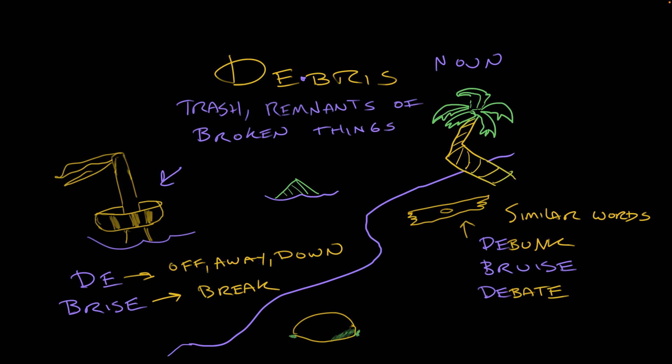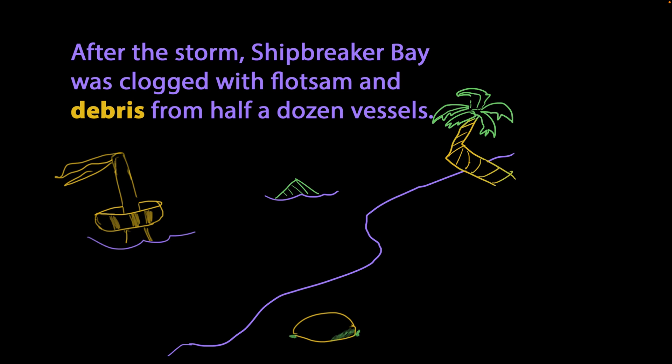Now, let's use debris in a sentence or two. After the storm, Shipbreaker Bay was clogged with flotsam and debris from half a dozen vessels. Flotsam is one of my favorite nautical words. It is specifically sea debris, the stuff that washes ashore after a shipwreck or a storm.